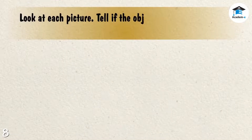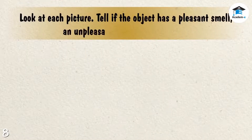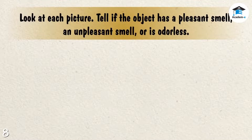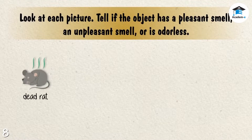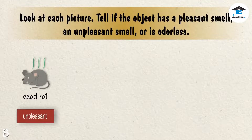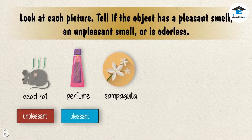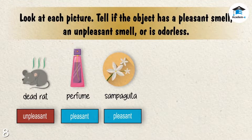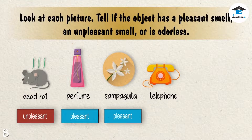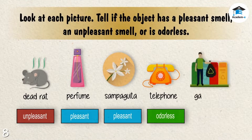Let's practice. Look at each picture and tell if the object has a pleasant smell, an unpleasant smell, or is odorless. Dead rat — unpleasant. Perfume — pleasant. Sampaguita — pleasant. Telephone — odorless. Garbage — unpleasant.